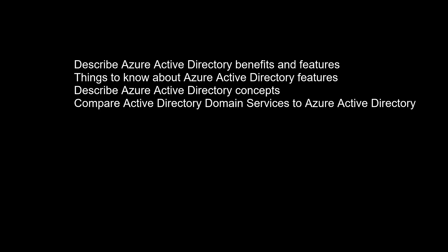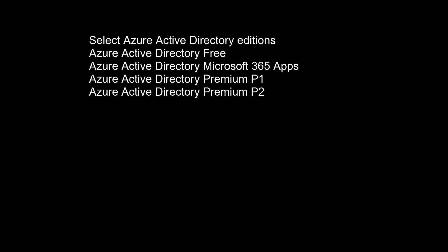Select Azure Active Directory editions. Azure Active Directory comes in four editions: Free, Microsoft 365 Apps, Premium P1, and Premium P2. The free edition is included with an Azure subscription. The premium editions are available through a Microsoft Enterprise Agreement, the Open Volume License Program, and the Cloud Solution Providers Program. Azure and Microsoft 365 subscribers can also buy Azure Active Directory Premium P1 and P2 online. Consider the following features that distinguish the different editions after reviewing them to determine which edition works best for your organization.